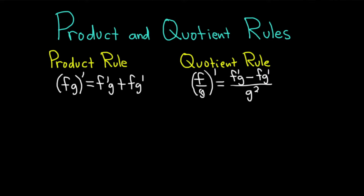The quotient rule says if you have f divided by g and you take the derivative, that's equal to f prime g minus f g prime all divided by g squared. If you think of f as your top function and g as your bottom function, you can think of it as the derivative of the top times the bottom minus the top times the derivative of the bottom, over the bottom squared. I think that is a very useful way to think about it. Let's do lots of examples.